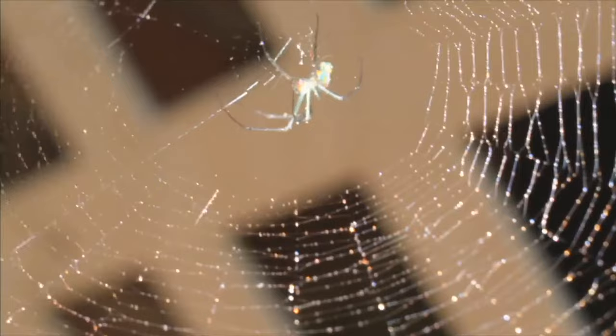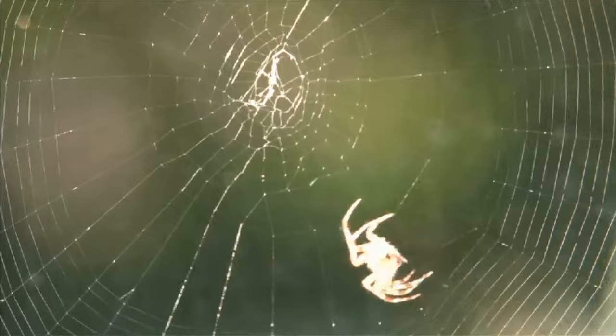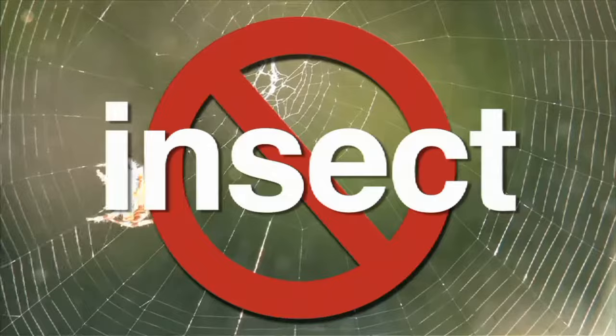A spider may look like an insect, but a spider has eight legs and its body has only two parts. Also, spiders do not have antennae. A spider is not an insect.